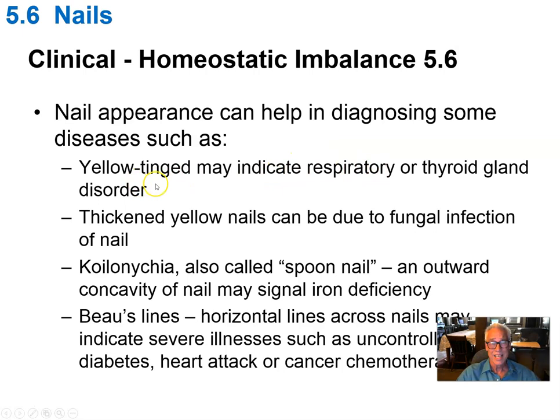A yellow-tinged nail may indicate something wrong with the respiratory system or with the thyroid gland — hypothyroid. Fungal infections will also cause the nails to have a yellow appearance and look thickened and rough on the surface. A concave surface instead of a convex surface of a nail, koilonychia, is suggestive of an iron deficiency.